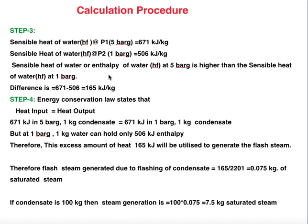Therefore, steam generated due to flashing = 165 / 2201 = 0.075 kg of saturated steam per kg of high pressure condensate. That means 1 kg of condensate at 5 bar gauge and 140°C generates 0.075 kg of flash steam at 1 bar gauge (120°C). If condensate flow is 100 kg, the flash steam generation is 100 × 0.075 = 7.5 kg of saturated steam.